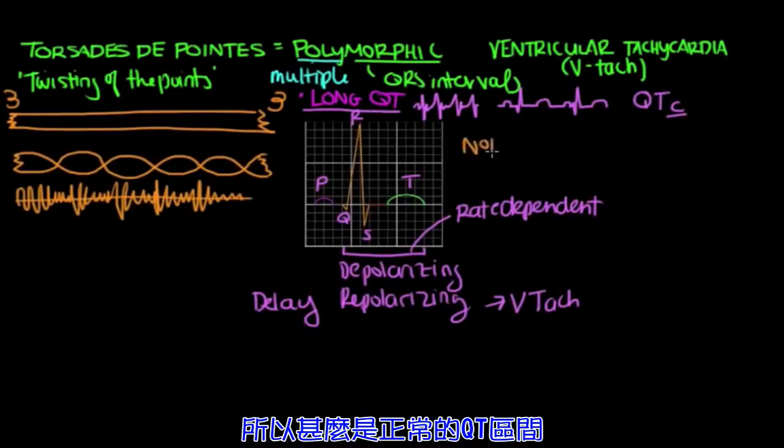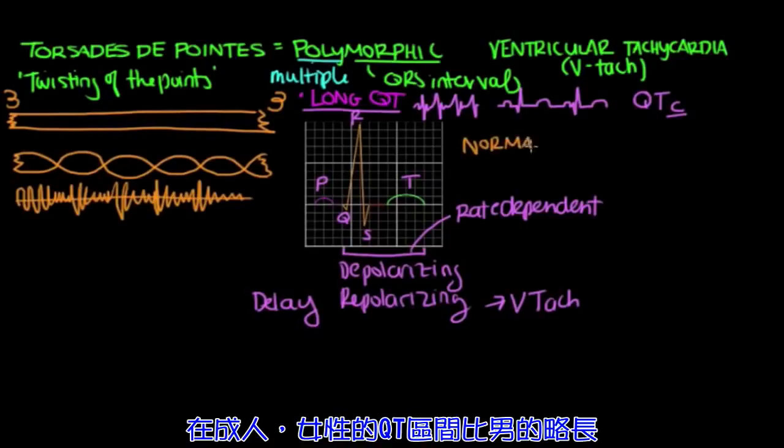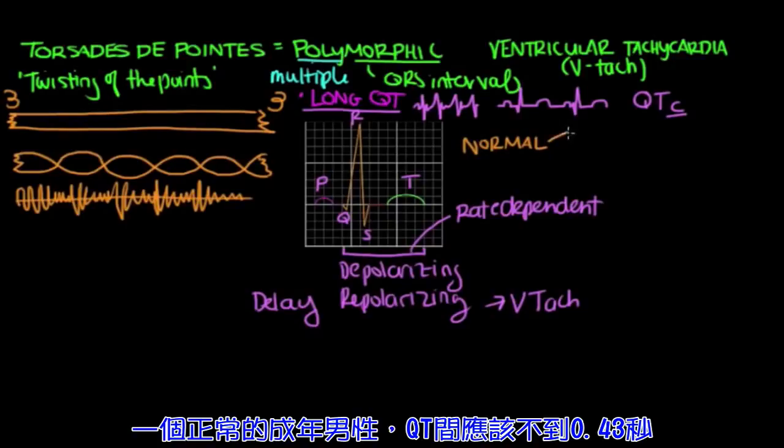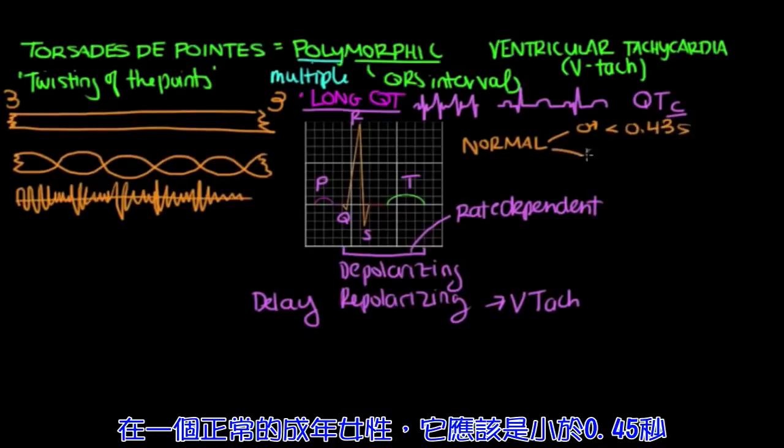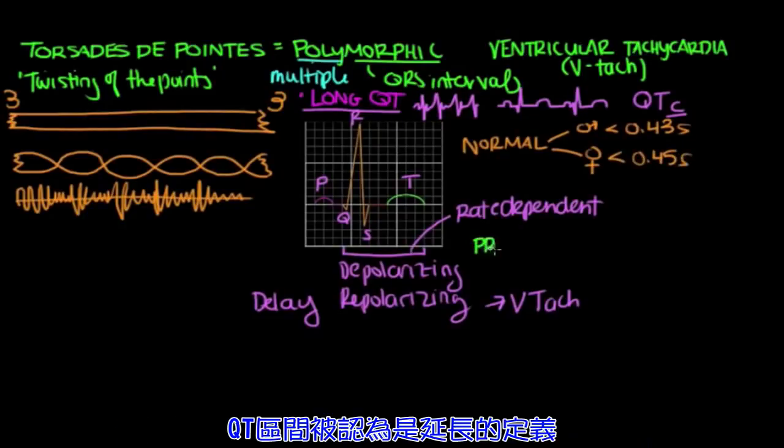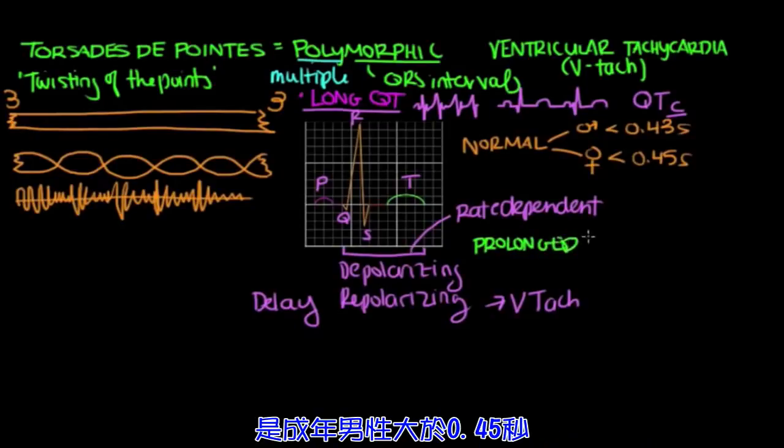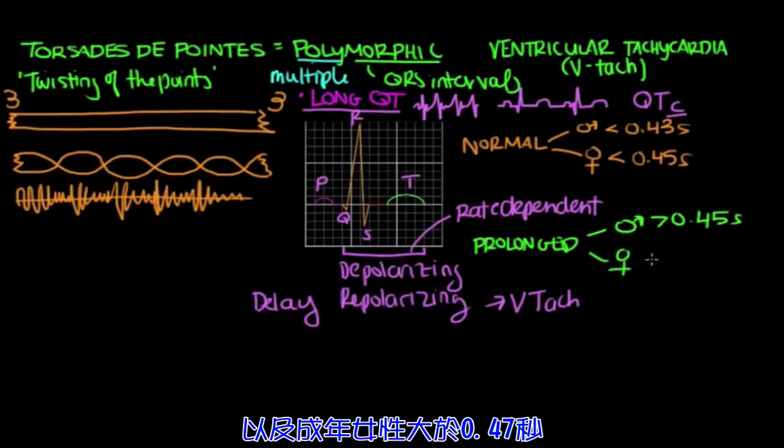Now what's normal for a QT interval? Well, in adults, females typically have a slightly longer QT interval than males. So in a normal adult male, the QT should be less than 0.43 seconds. And in a normal adult female, it should be less than 0.45 seconds. A QT interval is considered to be prolonged in an adult male if it's greater than 0.45 seconds, and prolonged in a female if it's greater than 0.47 seconds.